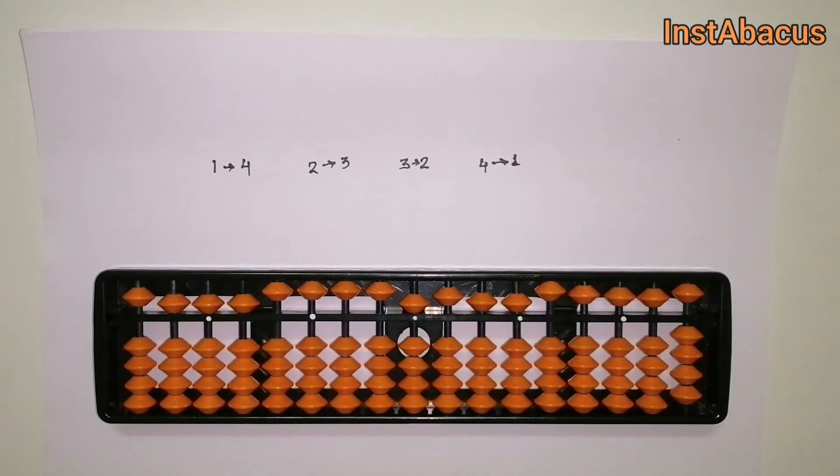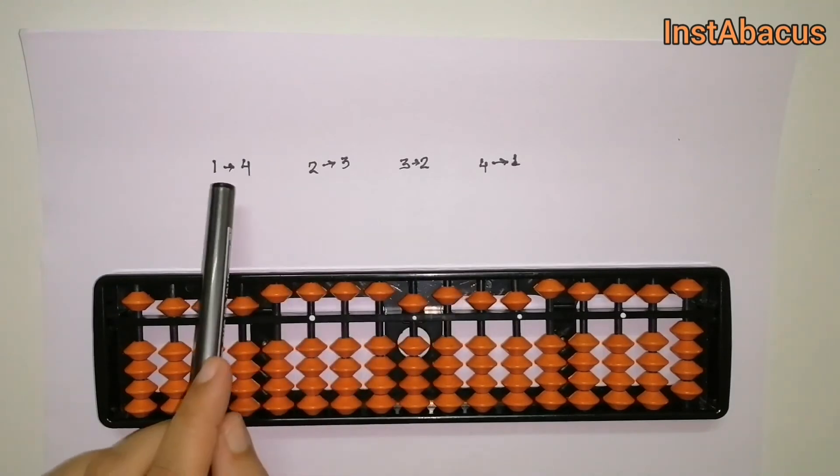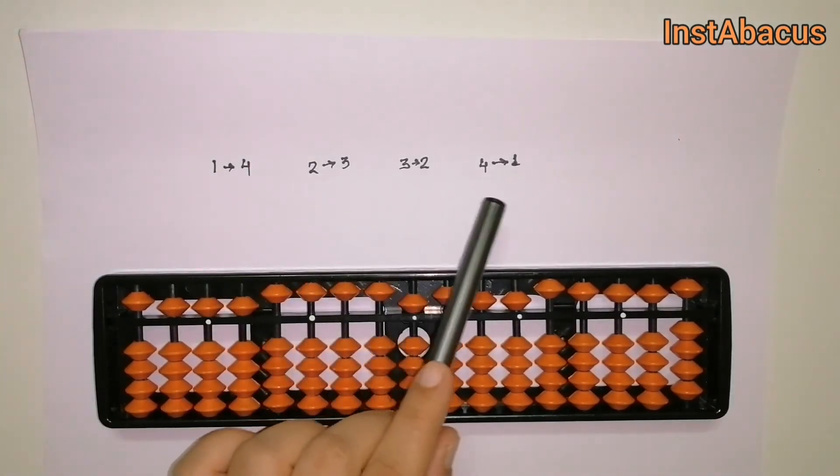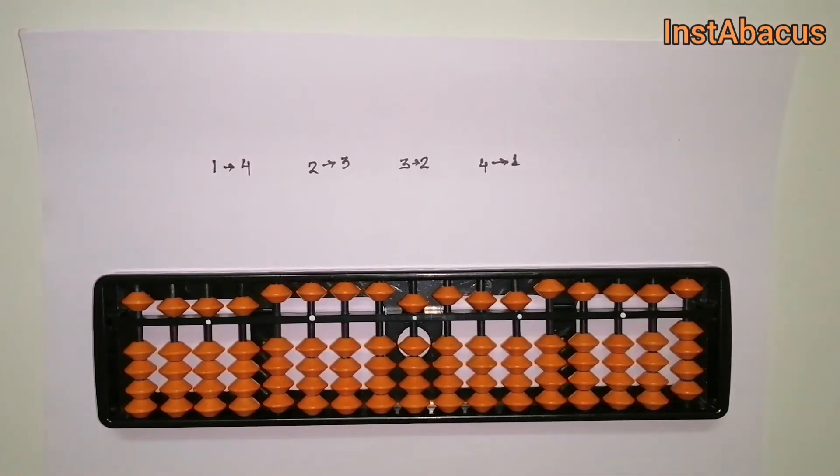One plus four is five, two plus three is five, three plus two is five, four plus one is five. This is a simple trick to remember the small friends. So even if anybody asks you what's the friend of two, you're not going to say four or one. Now you know that two plus three is five, so the small friend of two is three.